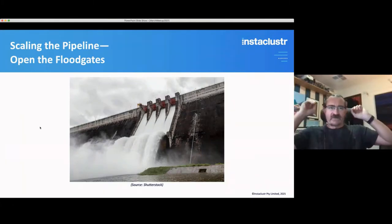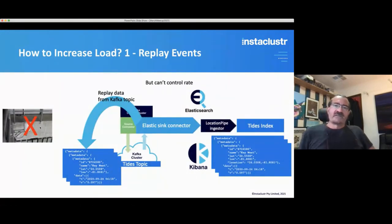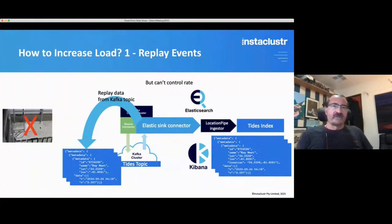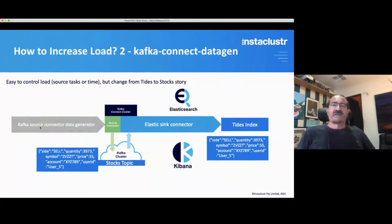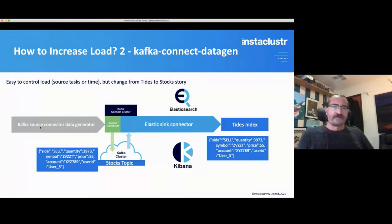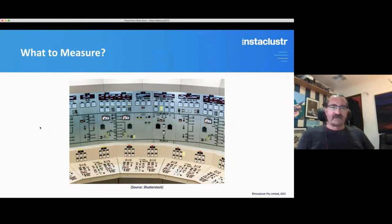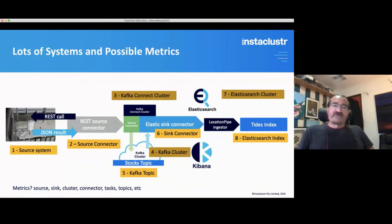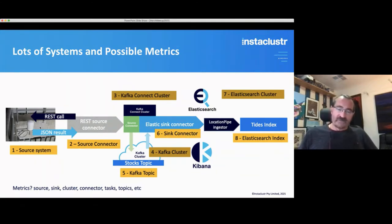The final thing I wanted to try was scaling the pipeline — opening the floodgates and increasing the load. One approach is to replay events already in Kafka. Another is to use a different source connector — I discovered the Kafka Connect DataGen, which is easy to control load with, but there's no tides example, so I changed the story from tides to stocks. When scaling multiple systems, metrics become important. There are lots of systems involved: the source system, source connectors, Kafka Connect cluster, sink connectors, the Kafka cluster, Kafka topics, Elasticsearch cluster, and Elasticsearch index — all have metrics.